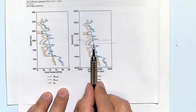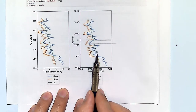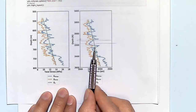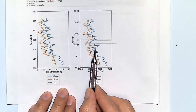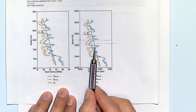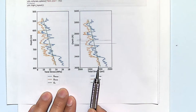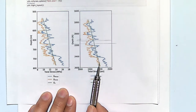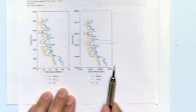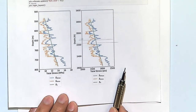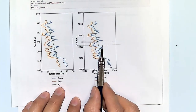Notice that as a function of depth we also have a change in stress regime. For example, at this location we have strike-slip. And we could find a point further down where it gets into reverse faulting. Calculating this stress variation with depth is very important.